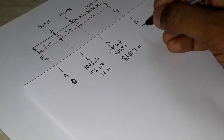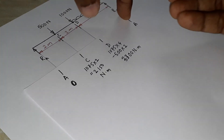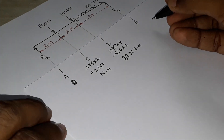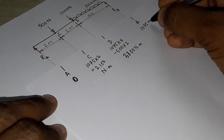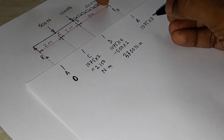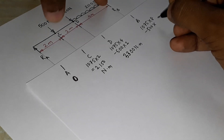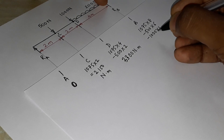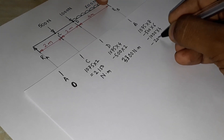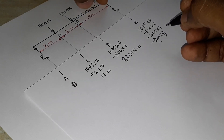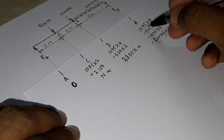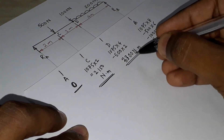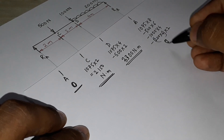At point B, we have: RA into 8 (clockwise), minus 500 into 6, minus 1000 into 4, and minus 200 into 4 into 2 (UDL load acting at the center of the 4-meter span). Substituting: 1075 into 8 minus 500 into 6 minus 1000 into 4 minus 200 into 4 into 2 equals 0. So the bending moment at B is 0, as expected for a simply supported beam.